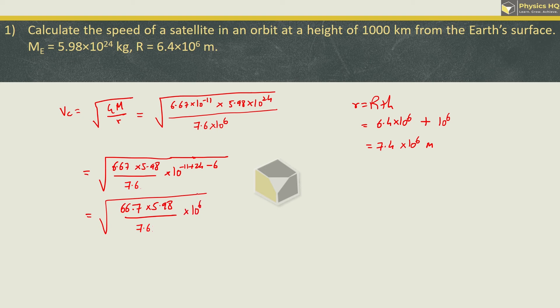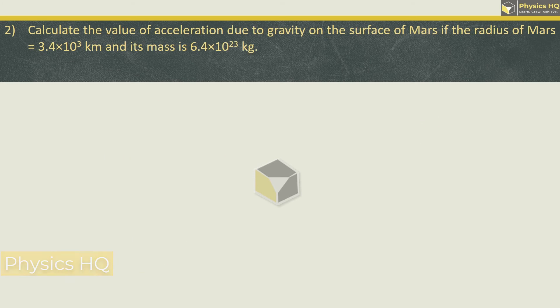This will be 10³. When you solve it, you will get the answer as 7.34, so the final answer is critical velocity equals 7.34 × 10³ meters per second. Next, let's calculate the value of acceleration due to gravity on the surface of Mars.